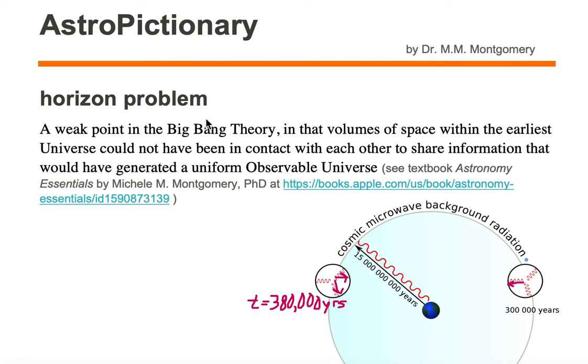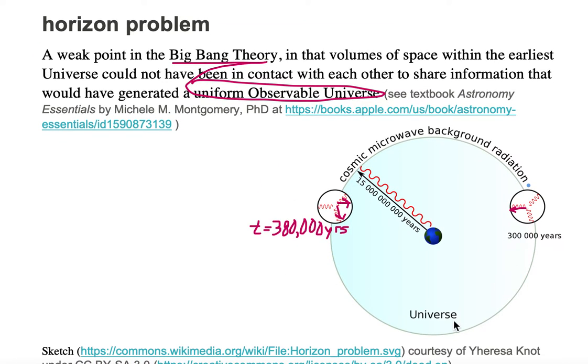So the horizon problem is a weak point in the Big Bang Theory. The Big Bang Theory assumes a uniform observable universe. If that was the case, everywhere would be colored the same, either a blue or a white. The horizon problem is that volumes of space within the earliest universe, such as the cosmic microwave background, could not have been in contact with each other to share information that would have generated a uniform observable universe.